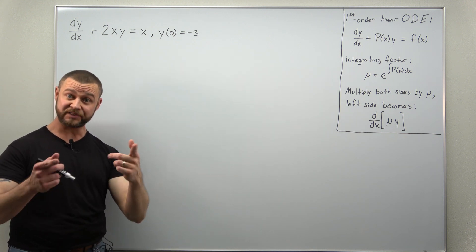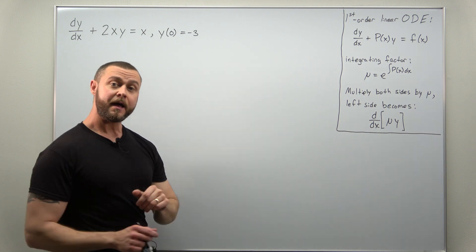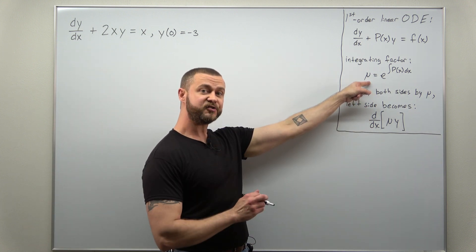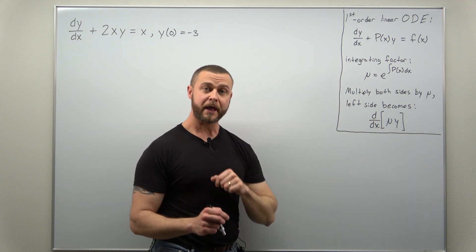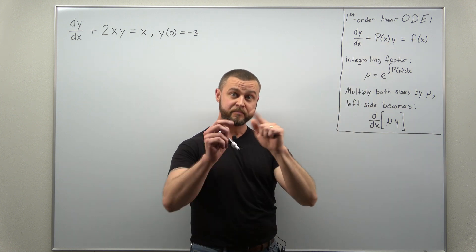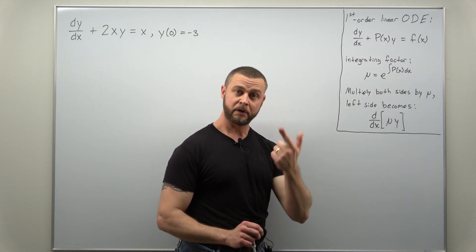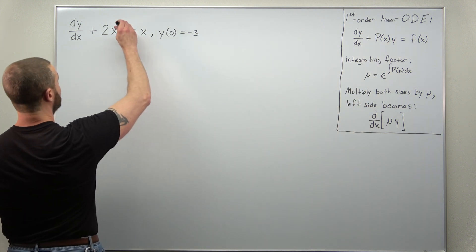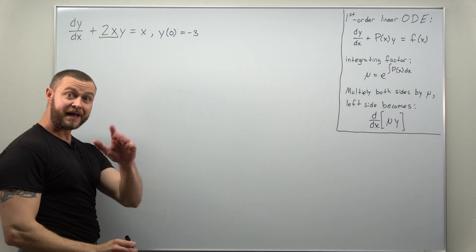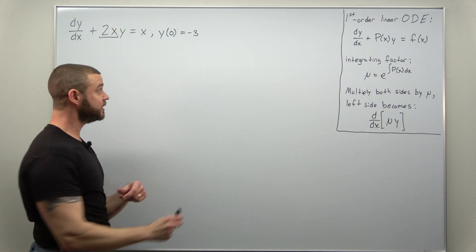So this is in linear form and we can go ahead and find the integrating factor, but first we need to identify p of x, and p of x is the quantity multiplying y in the differential equation. So if we take a look, what's multiplying y here is 2x, and that is p of x for this differential equation.